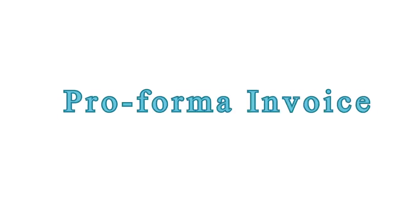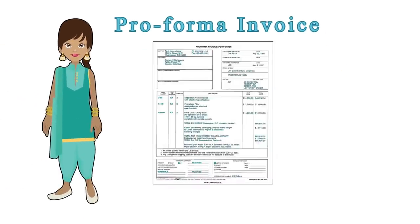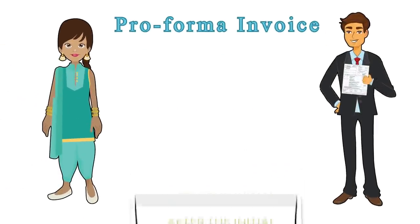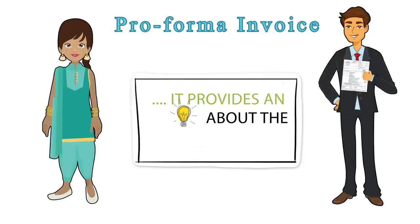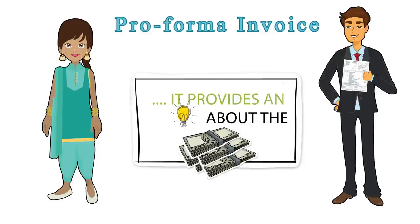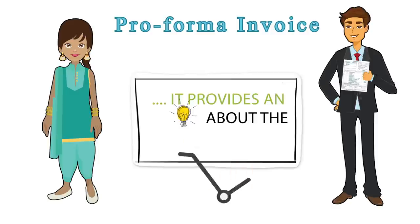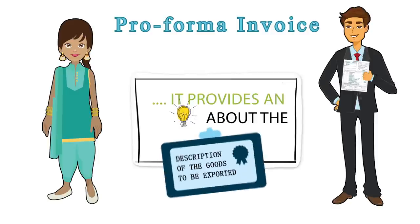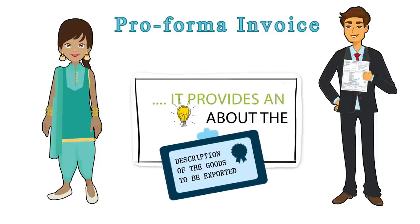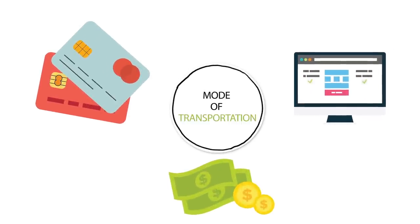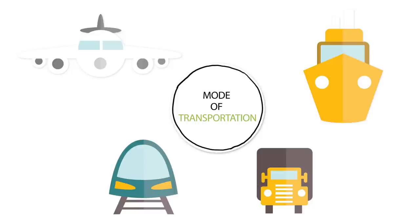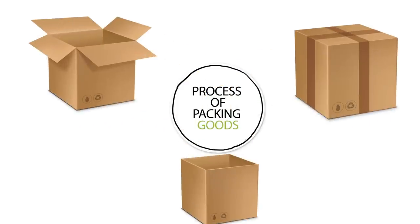Pro Forma Invoice: Nikku needs to send a pro forma invoice to the buyer after the initial discussion. It provides an idea about the prices, quality, quantity, and description of the goods to be exported. It also lays out the method of payment, mode of transportation, process of packing goods, and packing material to be used.